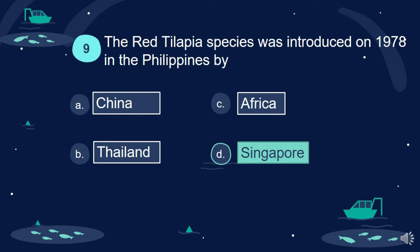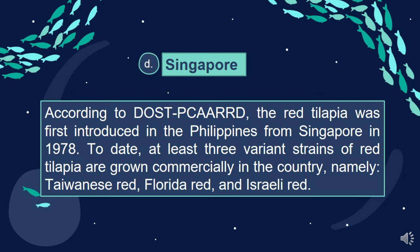Answer: D. Singapore. According to DOST-PCAARRD, the red tilapia was first introduced in the Philippines from Singapore in 1978. To date, at least three variant strains of red tilapia are grown commercially in the country, namely, Taiwanese red, Florida red, and Israeli red.